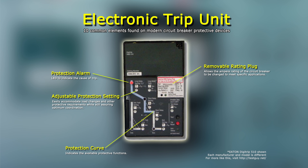Number 5: Trip Reset. After a protective trip, the trip reset button is used to clear protection alarms and reset the trip unit in preparation for the circuit breaker to be placed back into service.